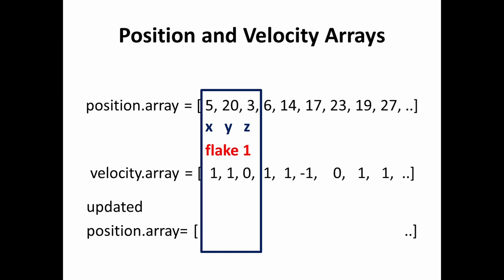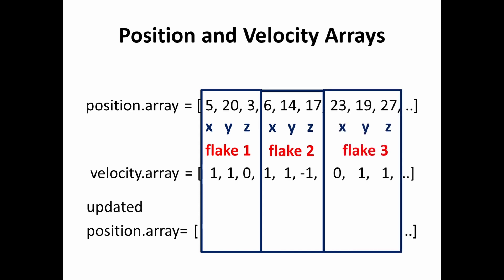The key concept when working with position and velocity arrays is that values at matching indices belong to the same snowflake. The first three values belong to snowflake one, the next three to snowflake two, and so on. We take the velocity array values and subtract them from the corresponding position array values to get the updated position for each snowflake.